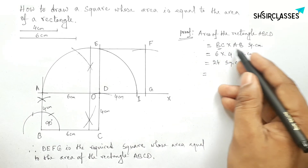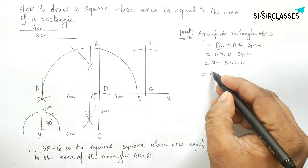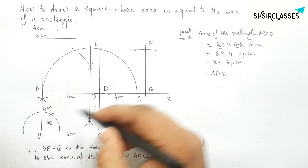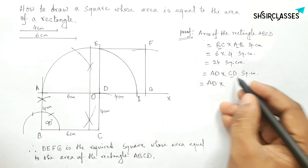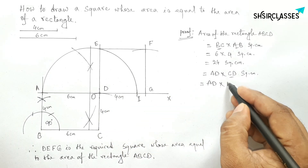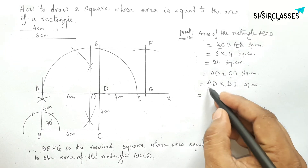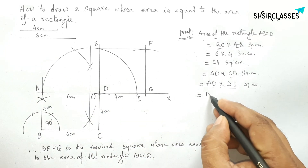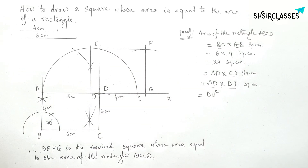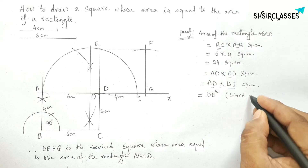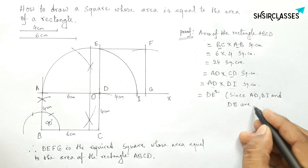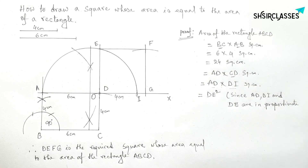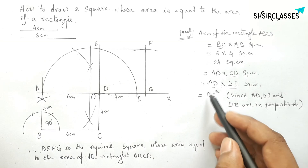Next, BC equals AD, so putting AD here. And AB equals CD, so CD equals DI, meaning we can put DI here. So AD times DI equals DE squared, because AD, DI, and DE are in proportion. By using the proportional formula, we can write AD times DI equals DE squared.